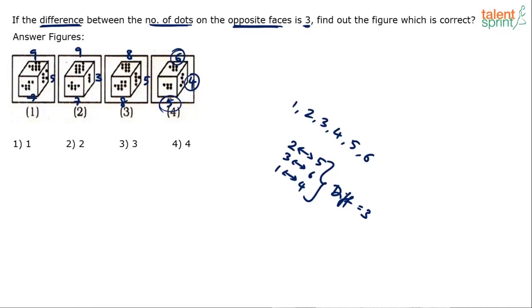Faces 6, 4, and 5 are all shown. Their opposite faces 3, 1, and 2 are not shown — which is correct since opposite faces must not appear together. So option 4 is the correct answer.